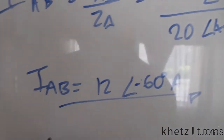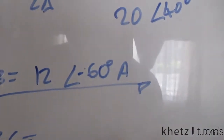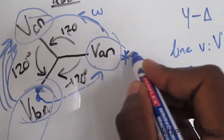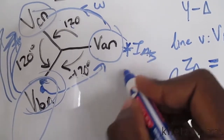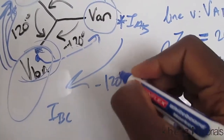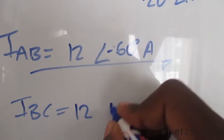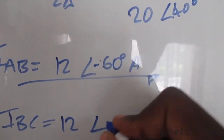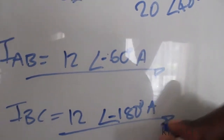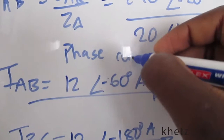Now we know that IBC is removed from IAB by 120 degrees. IAB is the reference here, so to find IBC, we subtract 120 degrees using the same magnitude of 12. Subtracting 120 degrees from negative 60 gives us negative 180 degrees — that is your IBC. This completes the first part of the question asking for phase currents.